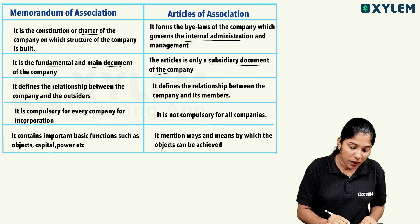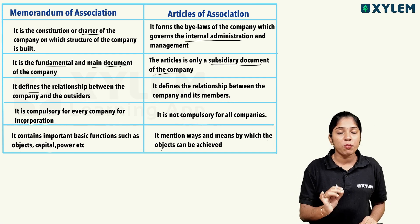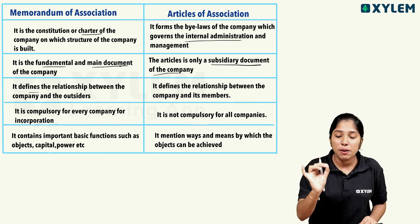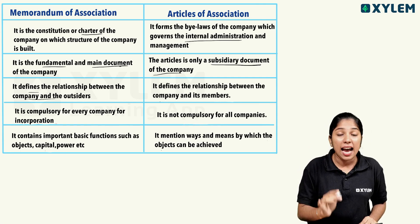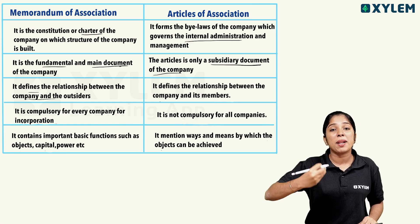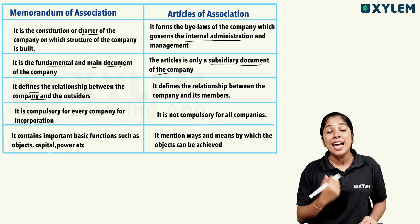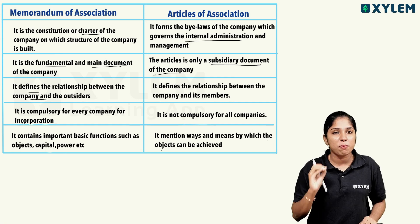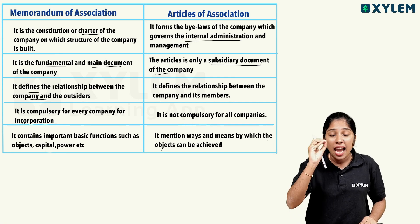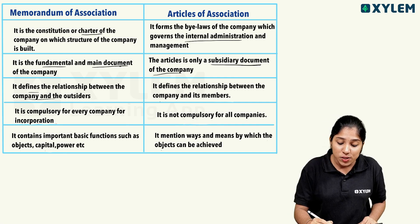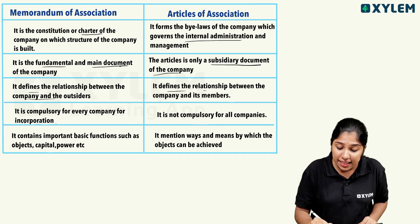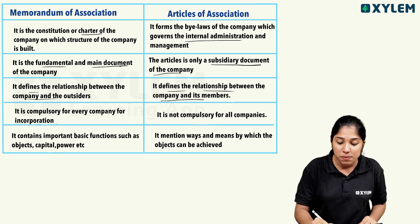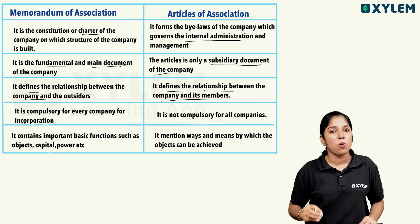The Memorandum of Association defines the relationship between the company and outsiders, such as suppliers. The Articles of Association defines the relationship between the company and its members — that is, the relationships inside the organization.